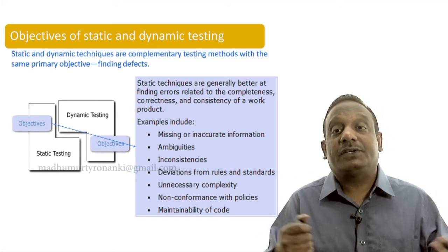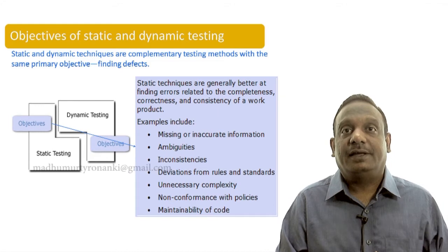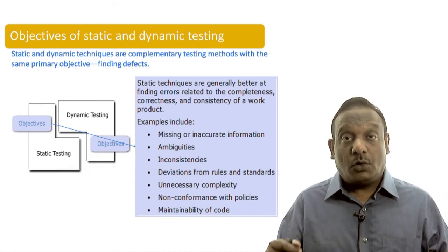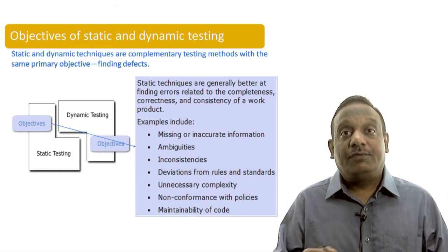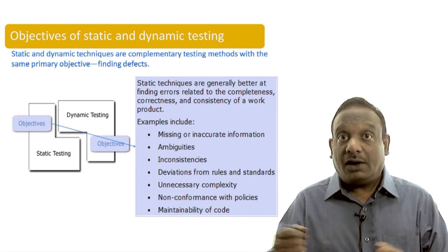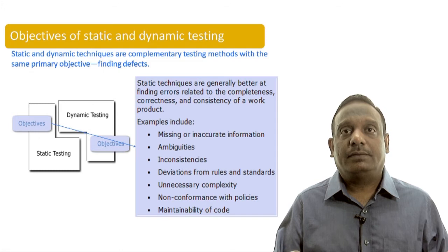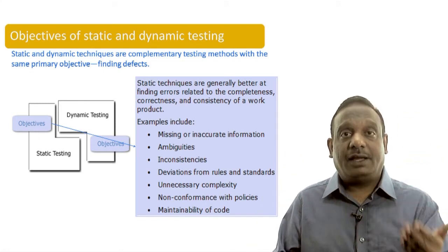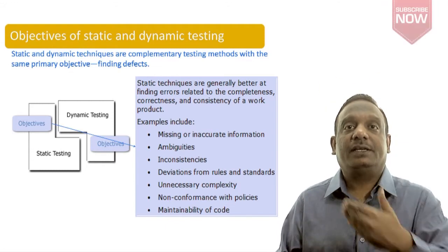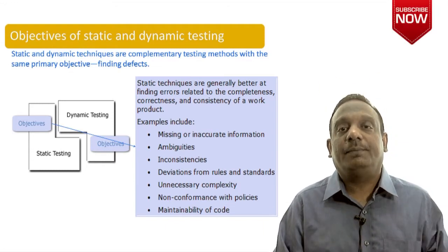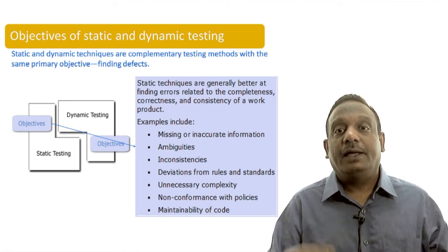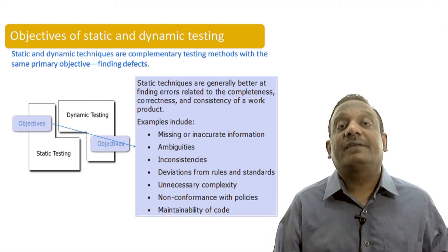Then deviations from rules and standards. Especially, lot of companies apply source code coding standards. And if they are not followed, they cannot be found by executing the code. They can be found only by checking very carefully against the checklist of standards. And those things can be found by tools much better than humans.